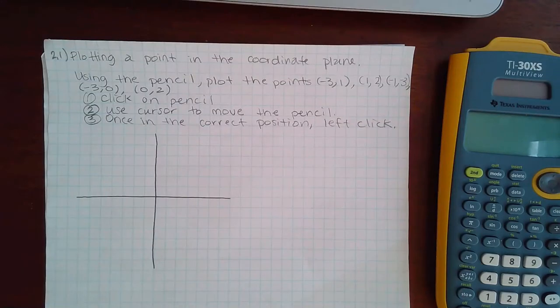So here they say plot a point in the coordinate plane. Using the pencil, plot the points (-3, 1), (1, 2), (-1, -3), (-3, 0), and (0, 2).